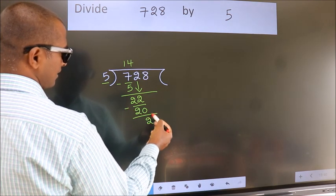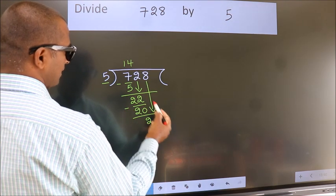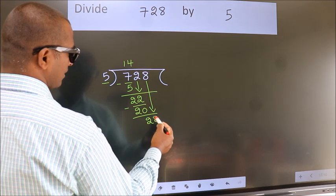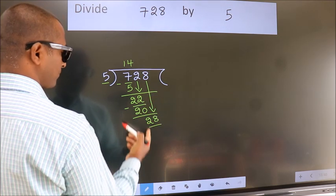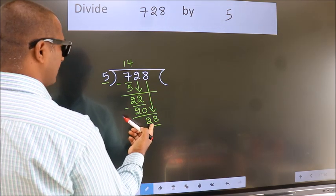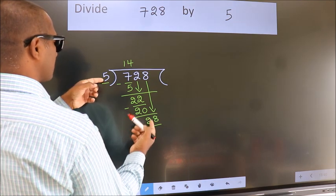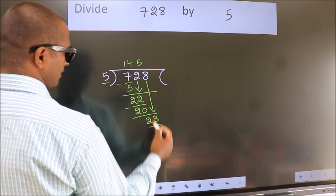After this, bring down the beside number. So, 8 down. So, 28. A number close to 28 in the 5 table is 5 fives 25.